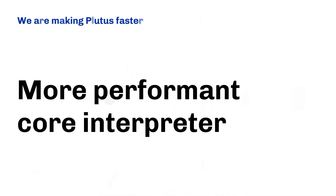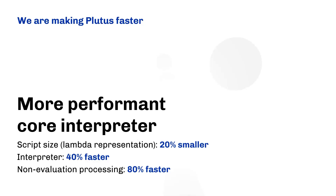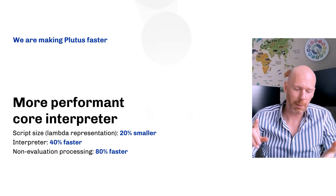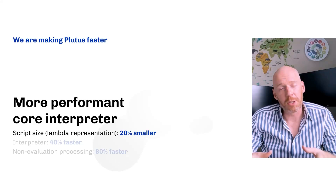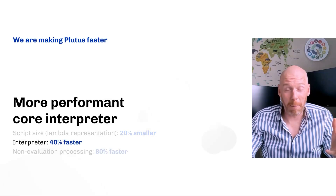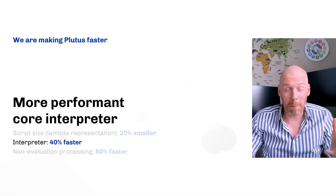We're making Plutus faster. The core interpreter — the thing that executes the untyped Plutus core — is being made faster and more performant. This helps ensure that validation of blocks is quick and efficient, that overall block propagation times are low, and that apps get executed quickly. We've made the script size or lambda representation 20% smaller in our next update. Our interpreters are blazing 40% faster. And non-evaluation processing — things like data munging and cost modeling — is 80% faster. We're not resting on our laurels; we're making things better even at core level within Plutus.